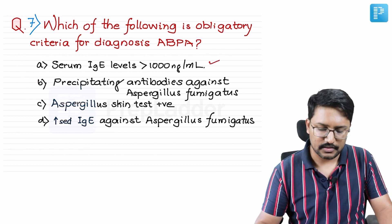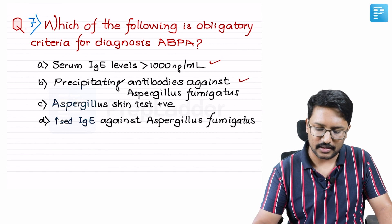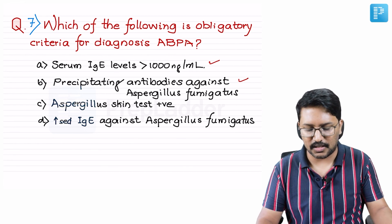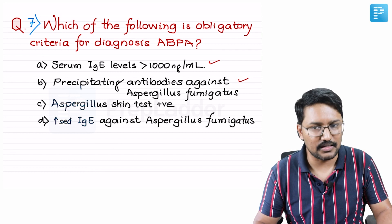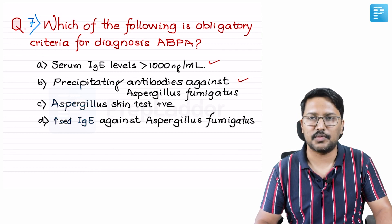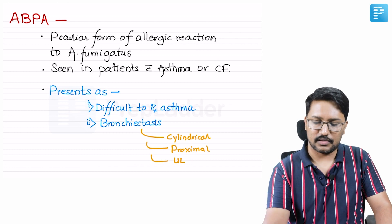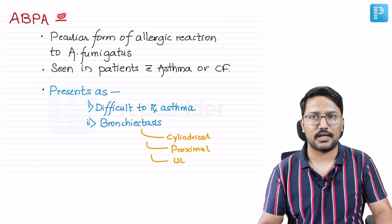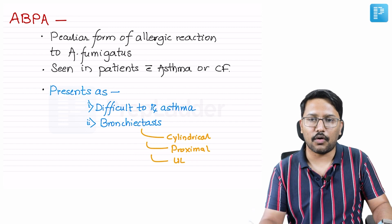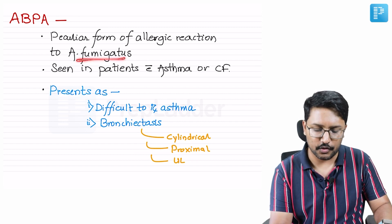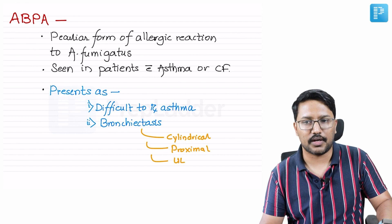The options are: serum IgE levels more than 1000 nanograms per ml, precipitating antibodies against Aspergillus fumigatus, Aspergillus skin test positivity, or increased IgE against Aspergillus fumigatus. Allergic bronchopulmonary aspergillosis is a peculiar form of allergic reaction to Aspergillus fumigatus species — it is important that it is Aspergillus fumigatus specifically.